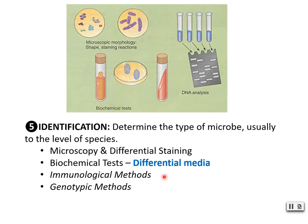So those are the five I's of microbiology. Once again: we're going to inoculate, we're going to incubate, we're going to isolate, we're going to inspect, and then we're going to identify. We want to isolate things in pure culture so we can work with them, identify them, give a diagnosis to our patient, and then of course set up treatment. Have a great day.